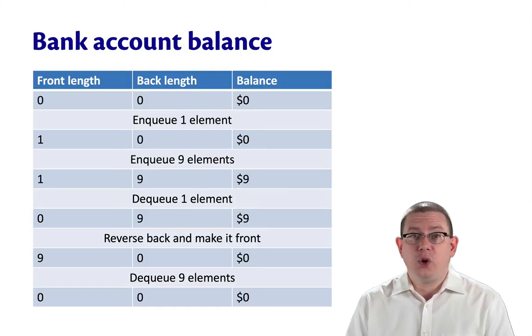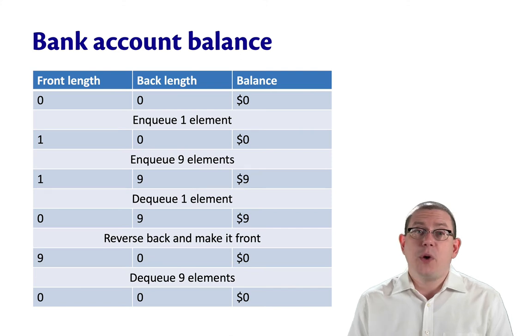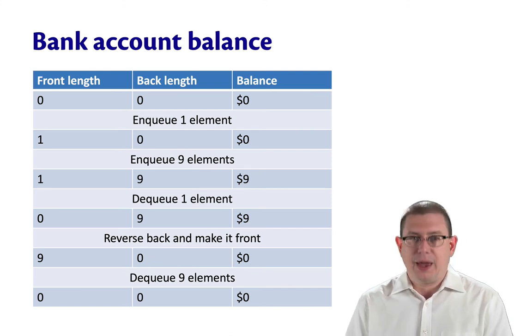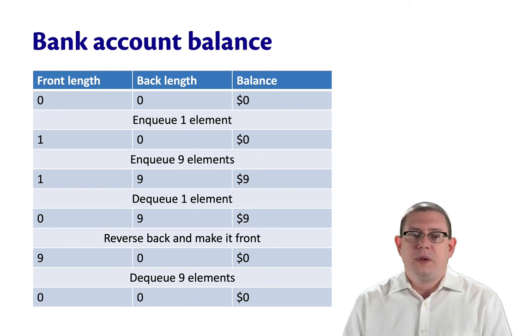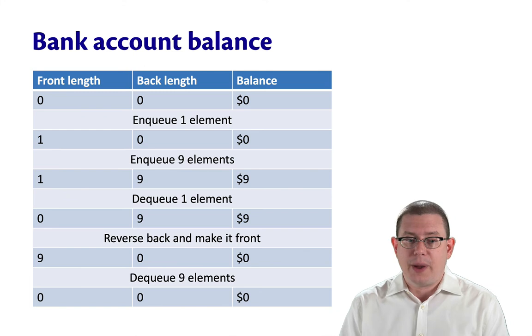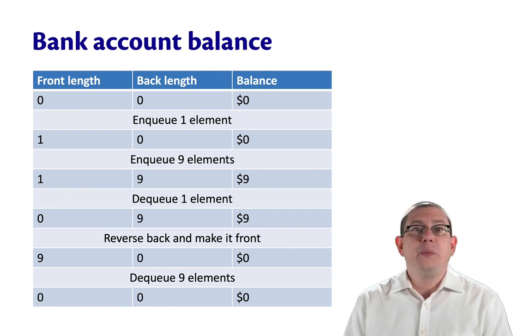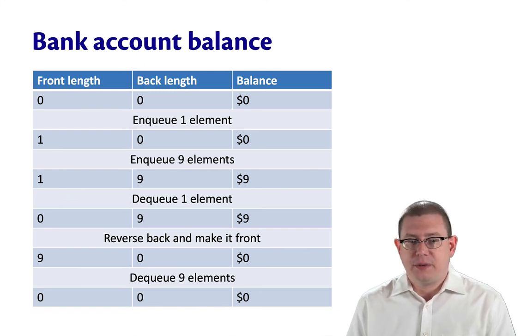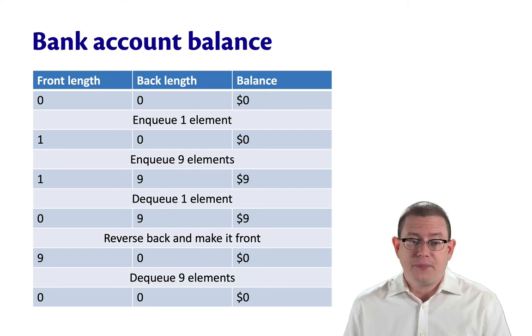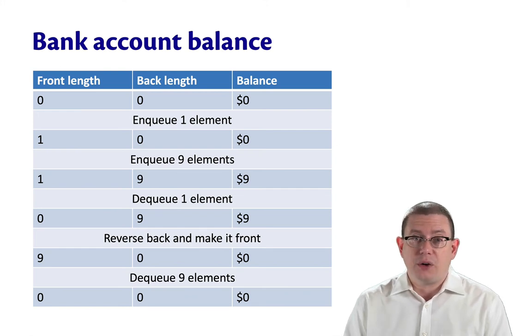Here's a worked out example of what that could look like. Suppose we start off with a queue that's completely empty and a bank account that's zero. Then we enqueue one element that's going to go onto the front. It has to by the rep invariant. Then we enqueue nine more elements. All of those are going to go onto the back. And we save up nine dollars in the process.